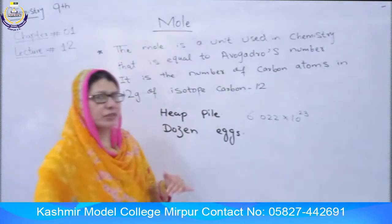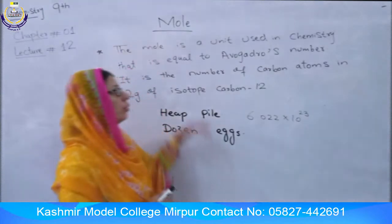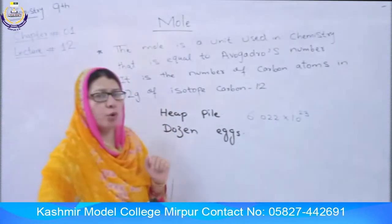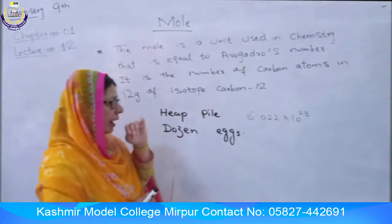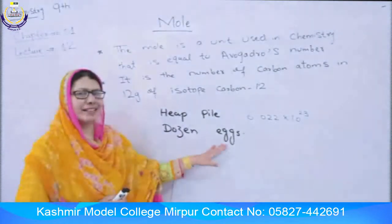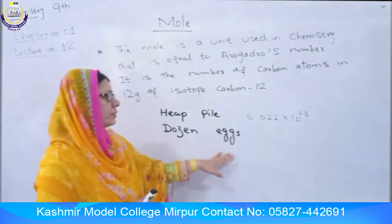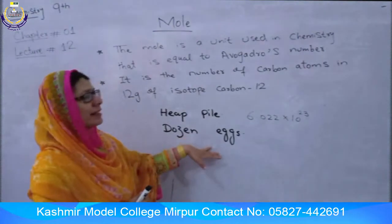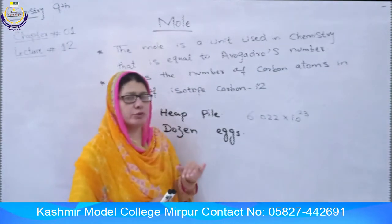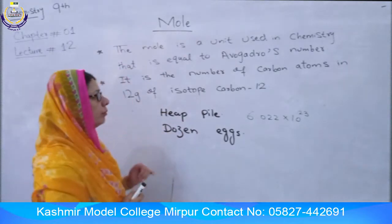Similarly, in chemistry, we count the particles of a substance using moles. Just as in dozens we can count bananas and oranges, in moles we can count atoms, molecules, ions, and formula units.